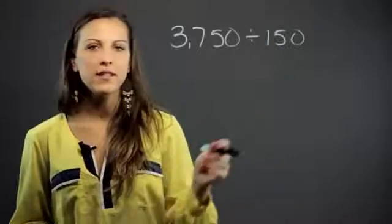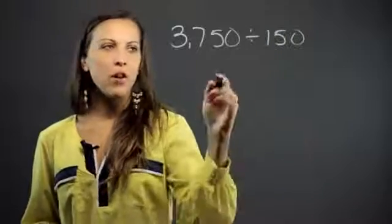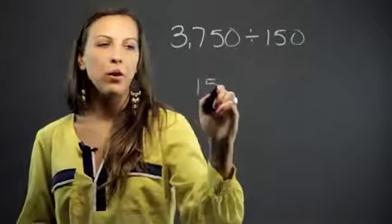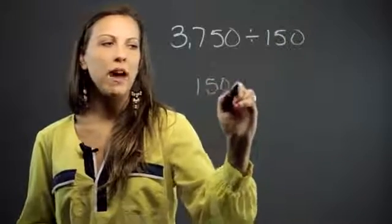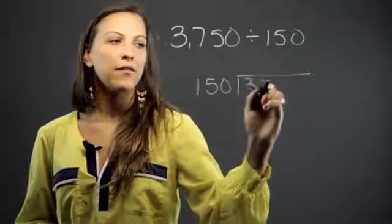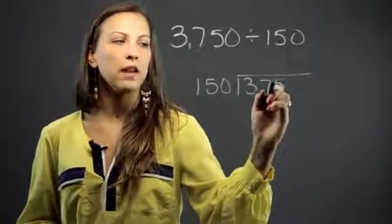So we're going to set it up with our long division setup, which means that the 150 will go outside of the house and that the 3,750 will go inside.